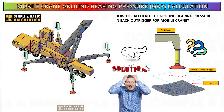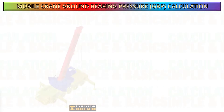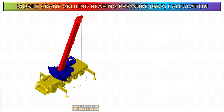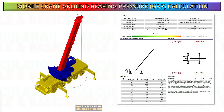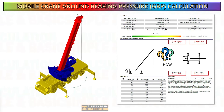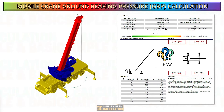Understanding the GBP enables the choice of suitable ground protection measures such as crane mats or outrigger pads. This is an example result of GBP obtained using software developed by the crane manufacturer. We will learn how to get this GBP result by doing manual calculation. Determining the ground bearing pressure in each outrigger of a mobile crane is more challenging when compared to a crawler crane.